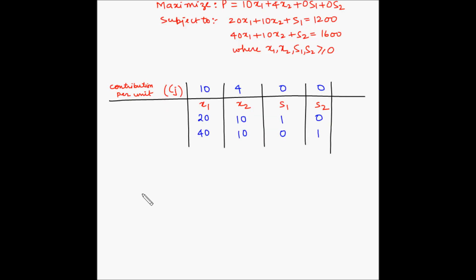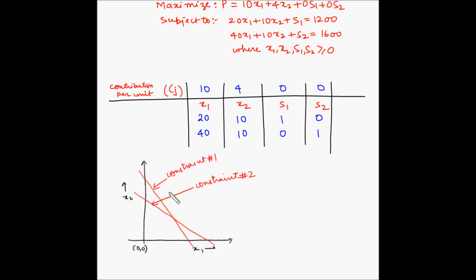In order to understand this step in detail, let us go back to the concepts of solving linear programming problems using the graphical method. Typically in a linear programming problem using the graphical method, we have the decision variables x1 and x2 plotted on the x and y axis of a graph. Then we take the constraints and plot them as a straight line — constraint number one and constraint number two.